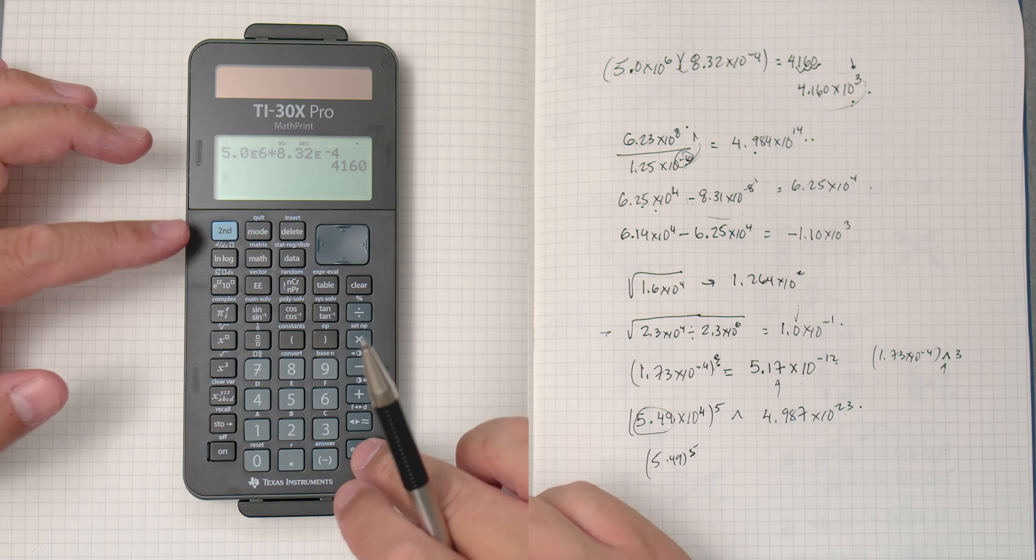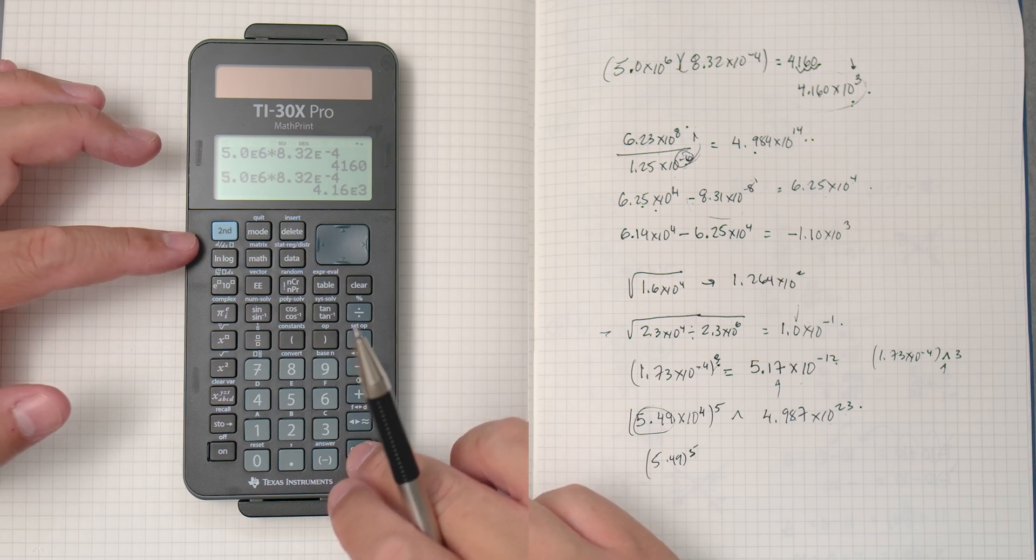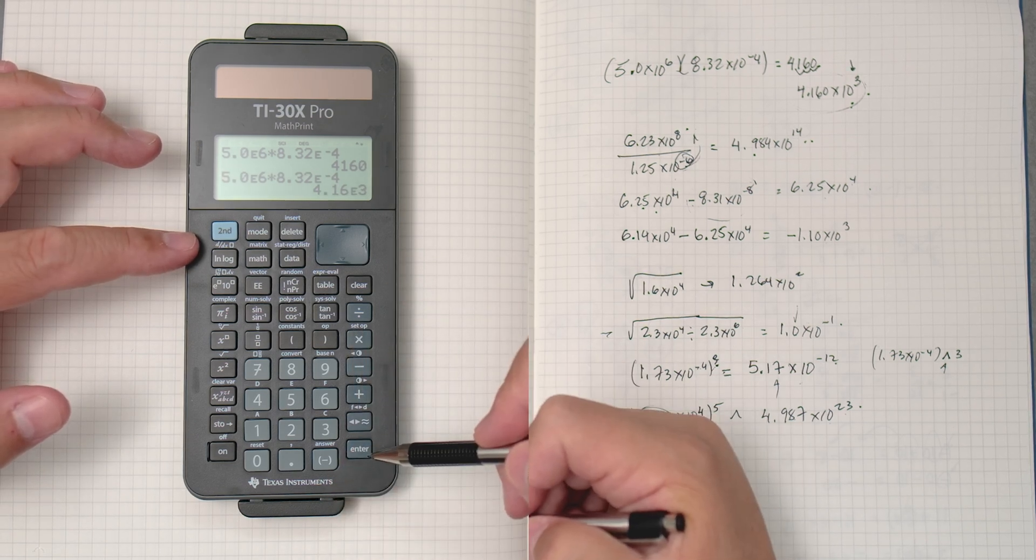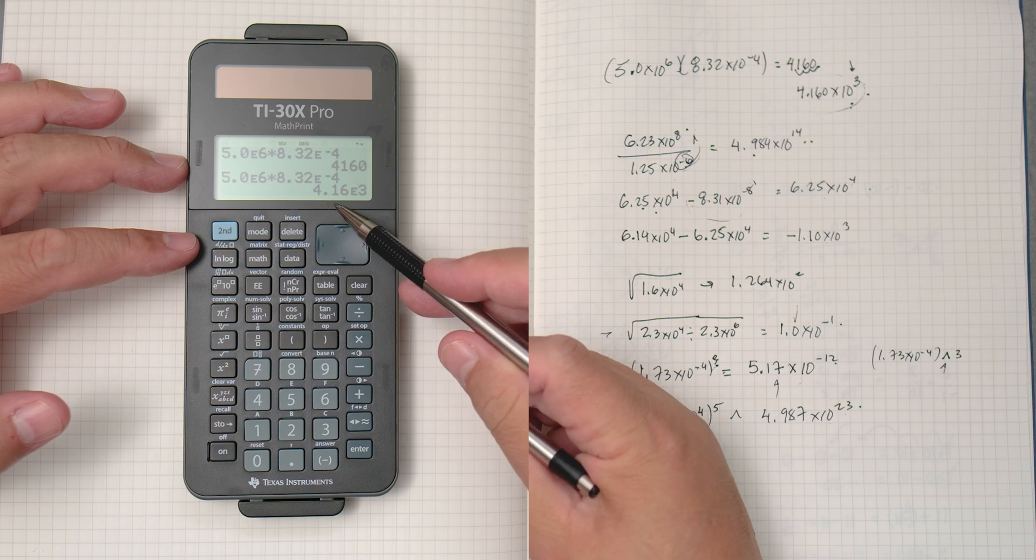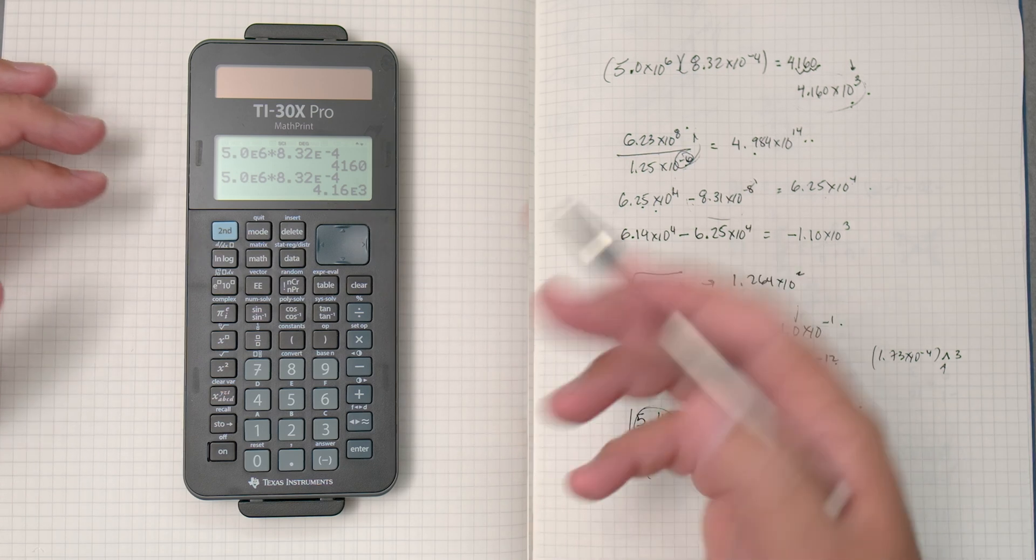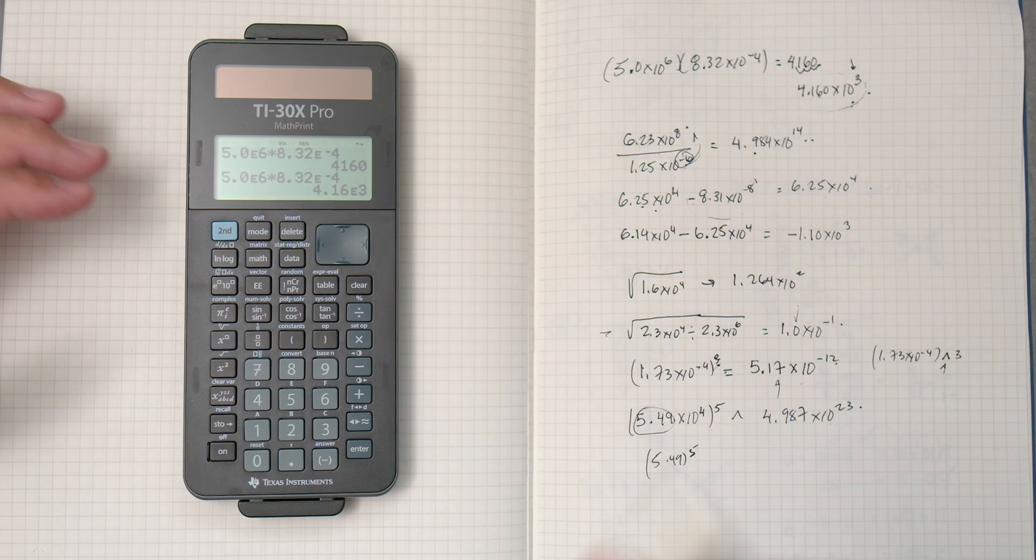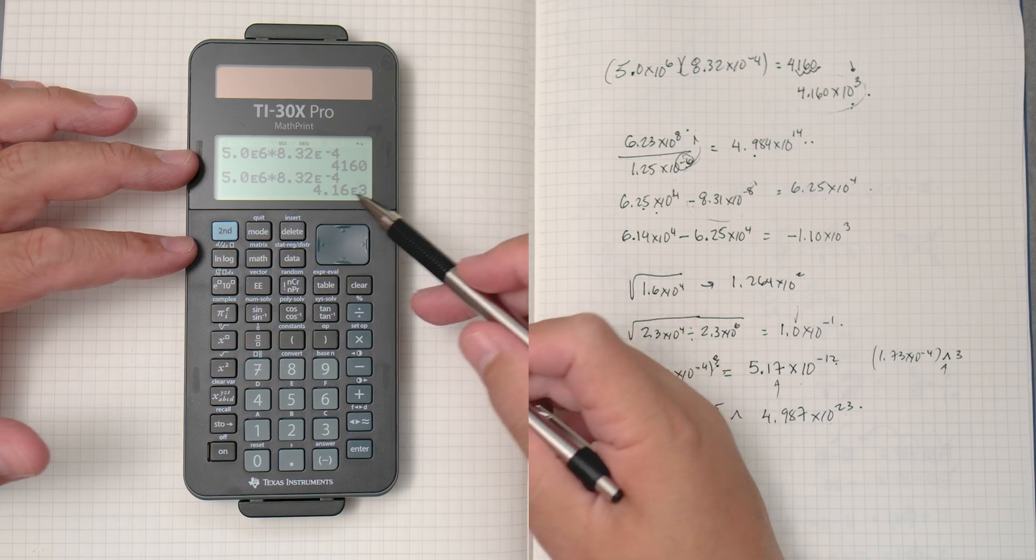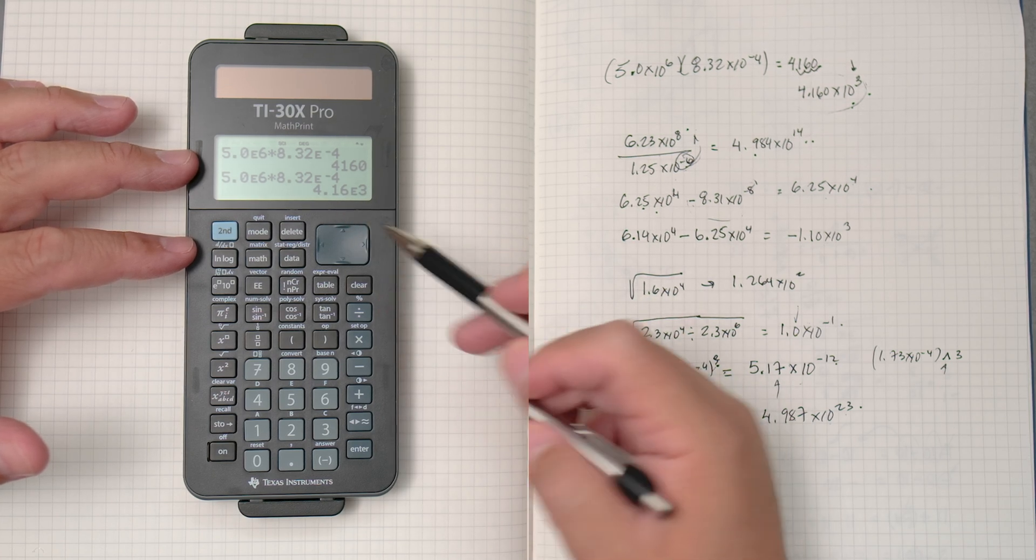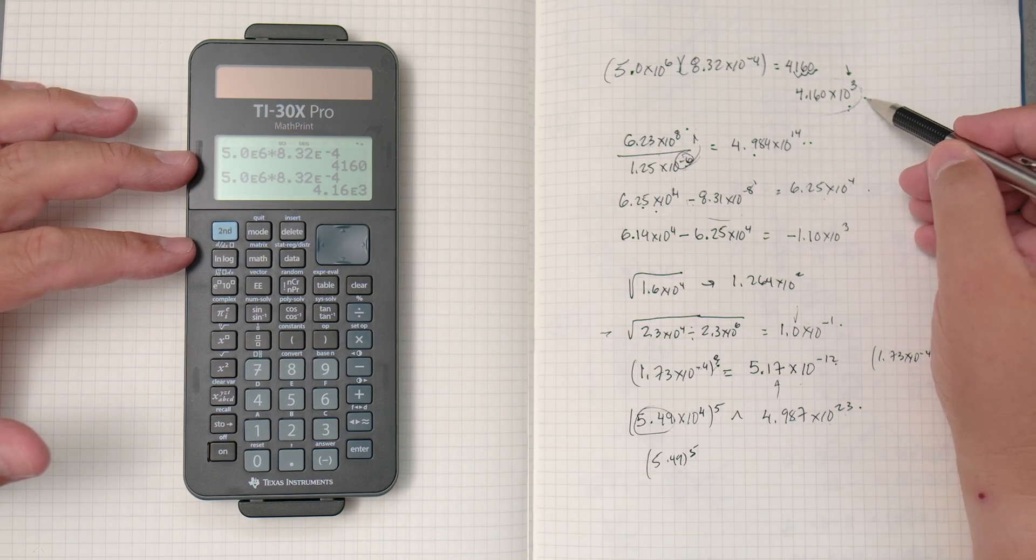And what we can do, let's see, if we press enter one more time, it gives me the answer, 1.16 times 10 to the third. We don't have to do it, we don't have to press the button twice because we just changed modes, we have to do it once. 4.16 times 10 to the third, see that?